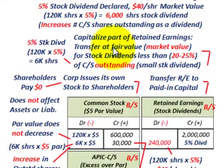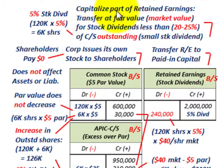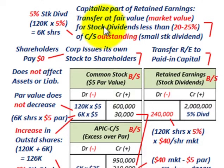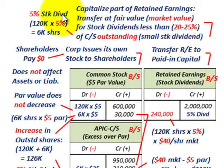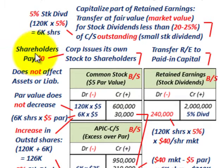For this small stock dividend, we're going to be capitalizing part of the retained earnings — that is, we're going to transfer at the fair value or market value of our stock dividend into common stock. A small stock dividend is less than 20 to 25% of common stock outstanding. We had a 5% dividend on 120,000 shares, so that's 6,000 shares to be distributed to shareholders. The shareholders pay nothing for this stock; the corporation simply issues its own stock to them as their dividend.